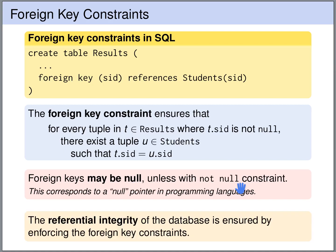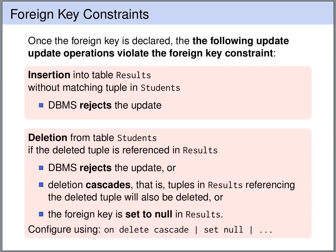The database ensures referential integrity by enforcing all foreign key constraints. Once the foreign key constraint is declared, certain update operations will violate it. For instance, if we try to insert a row in the results table without a matching row in the students table, the database management system will reject this update.